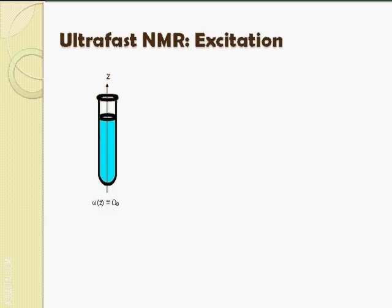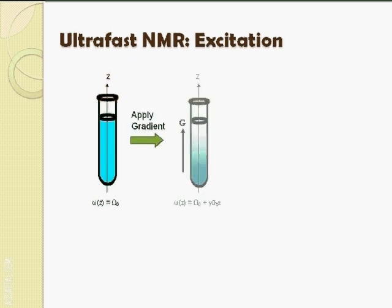A chirped RF pulse addresses the frequencies in our sample sequentially in frequency space. By applying a gradient to our sample and assigning a different frequency to each position, we can excite it sequentially in real space, that is, along the z-axis. This is illustrated in the following animation.